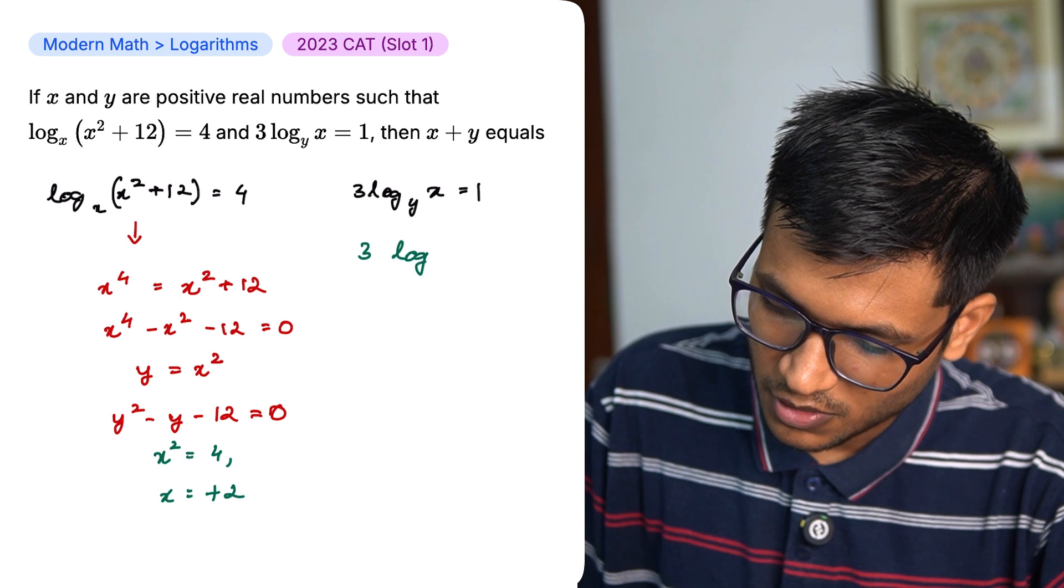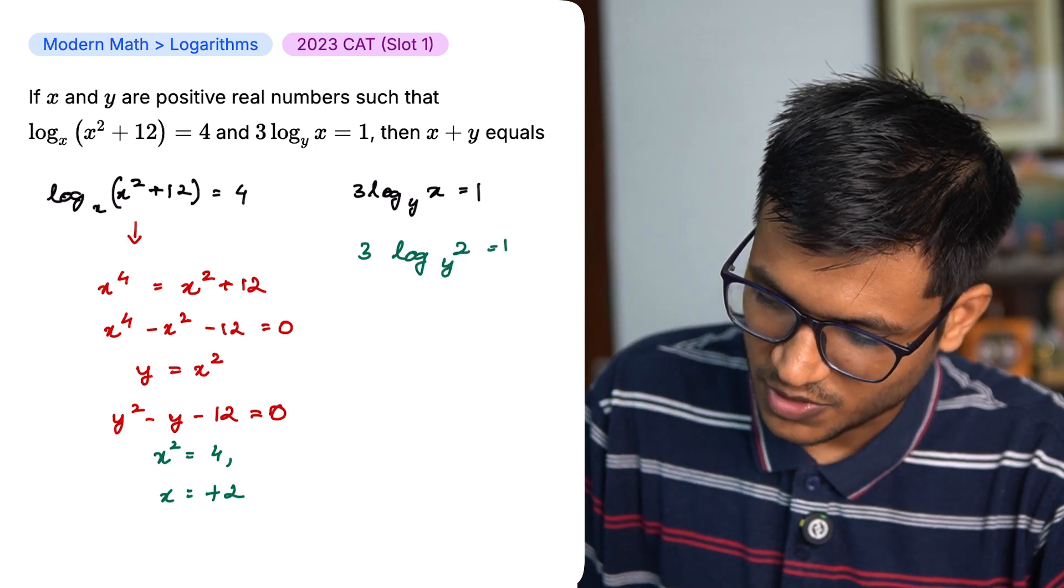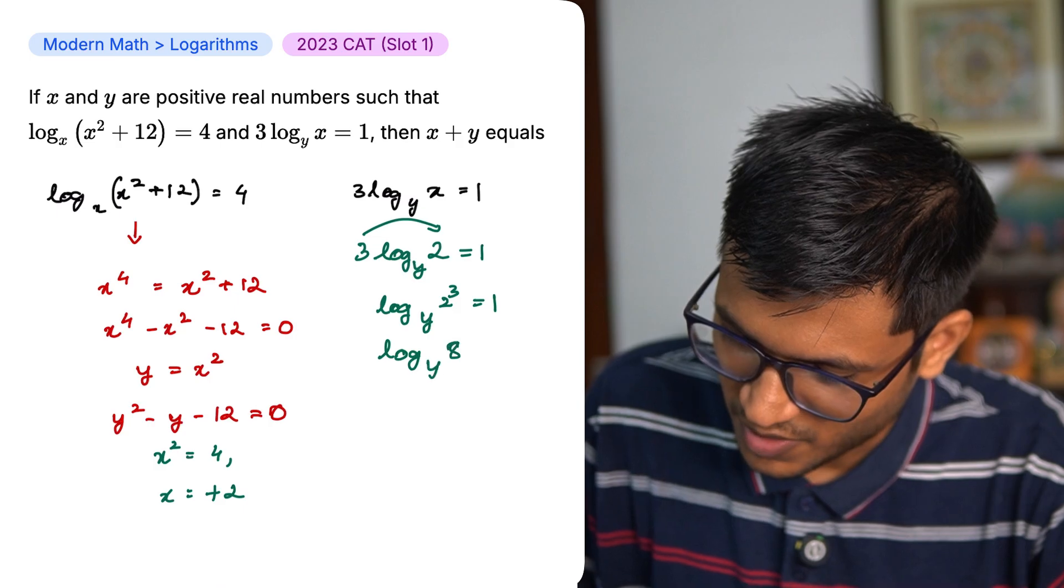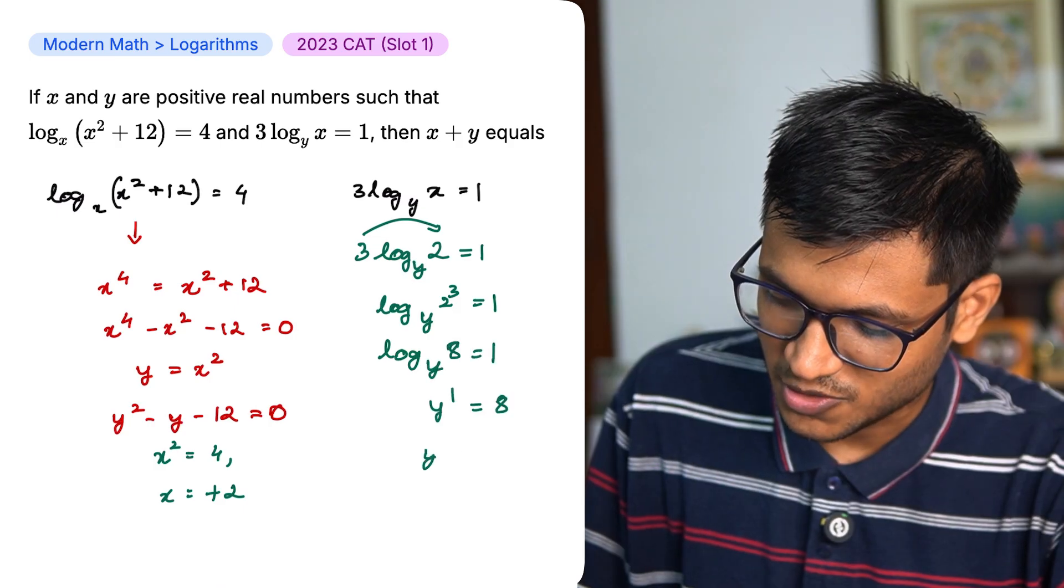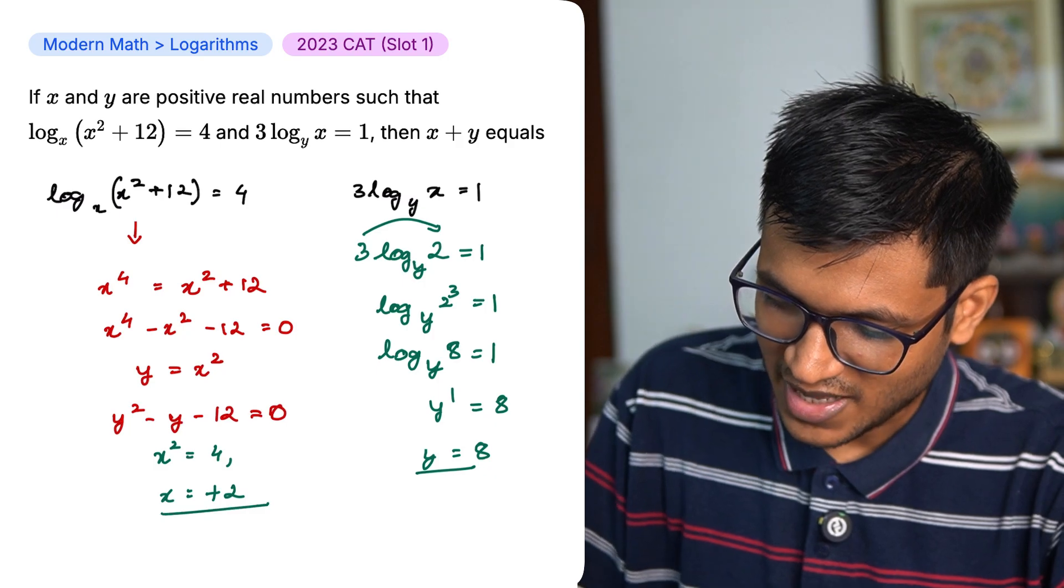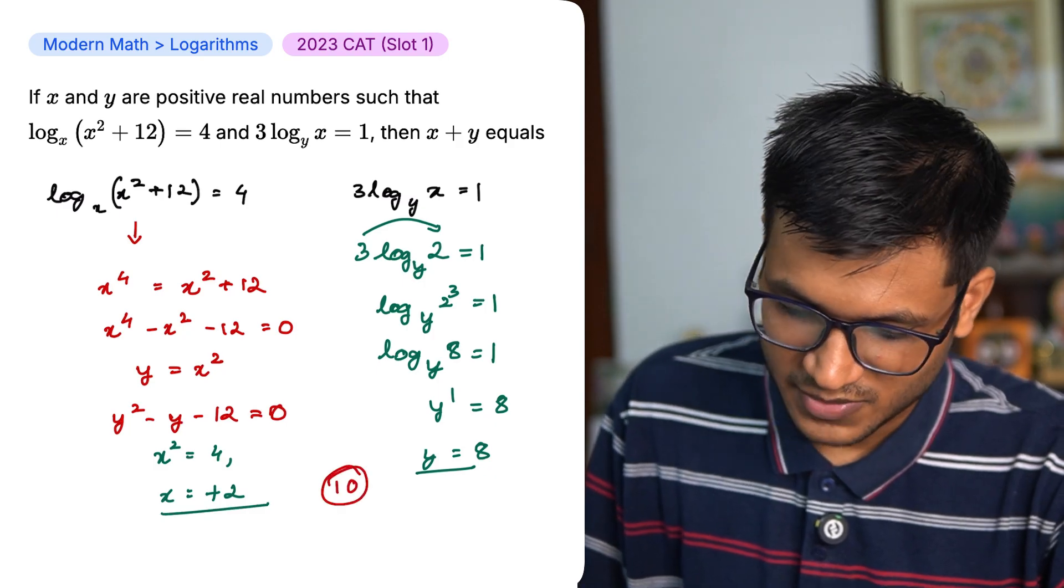3 log 2 base y equal to 1. Let me bring 3 on top. I get log 8 base y equal to 1 which means y equals 8. So x is 2, y is 8 and if I add them up, I get 10. And that is my answer.